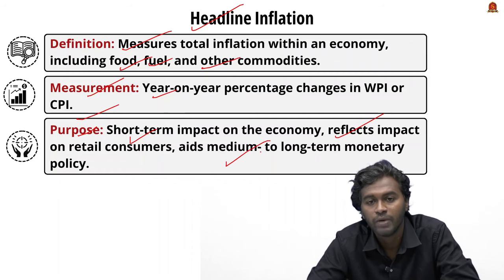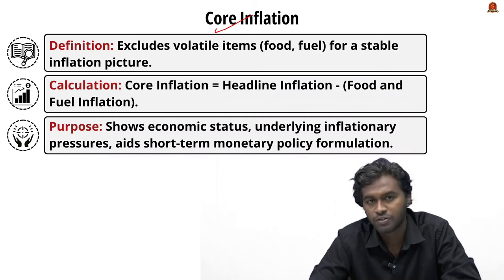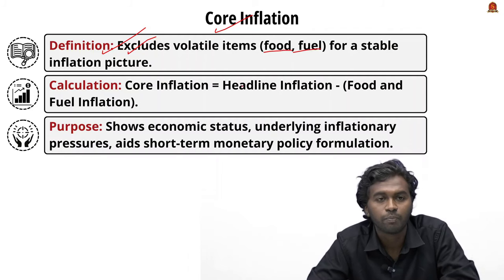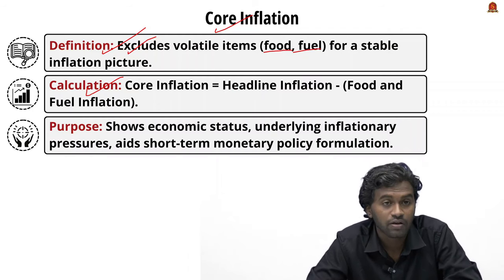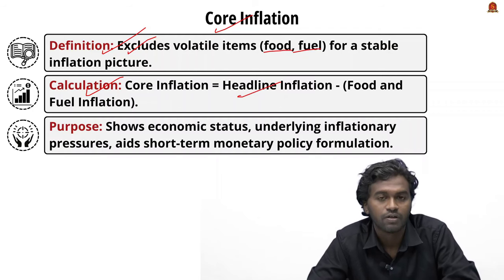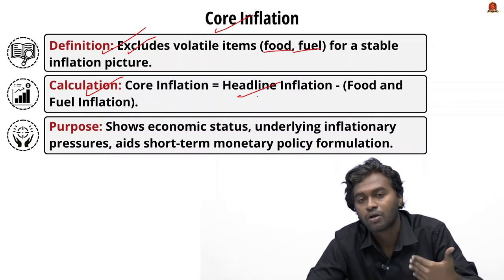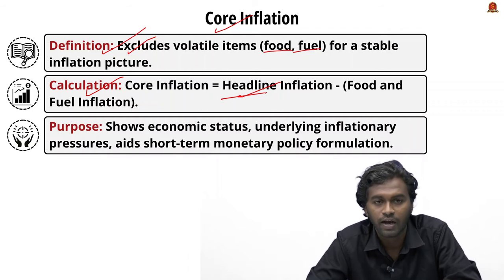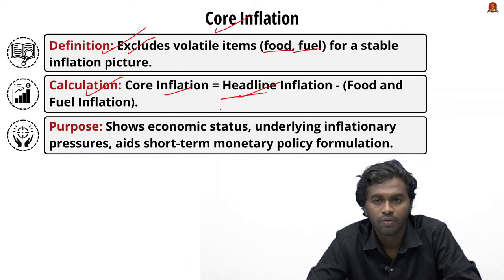What is core inflation? Core inflation measures inflation excluding volatile items such as food and fuel, in order to understand a stable and more accurate picture of the current inflationary situation. It is calculated by subtracting food and fuel from the headline inflation — there is no separate index for it. Therefore: Core Inflation = Headline Inflation minus Food and Fuel, since food and fuel are considered volatile components.